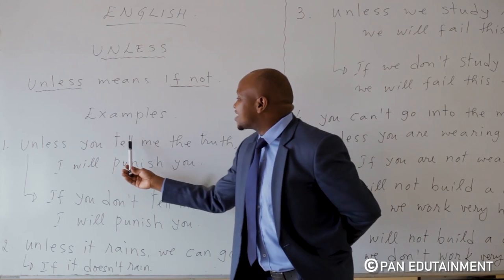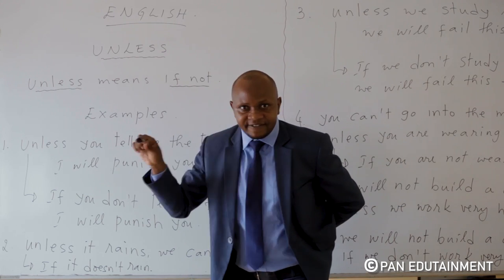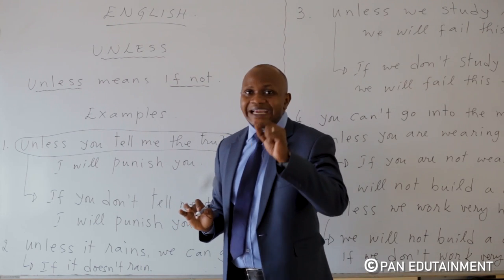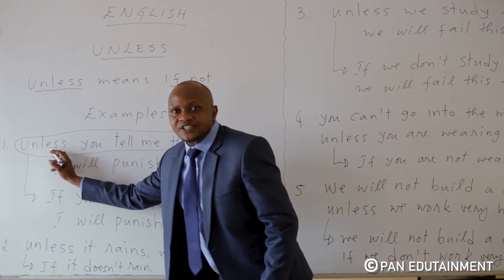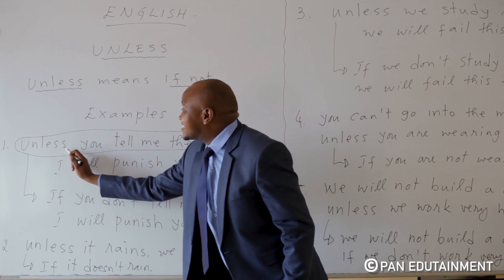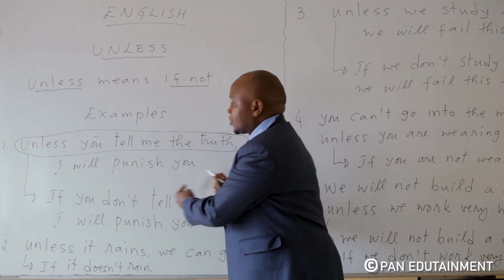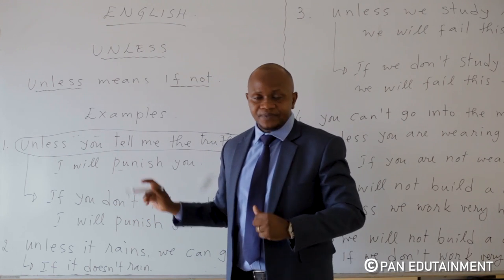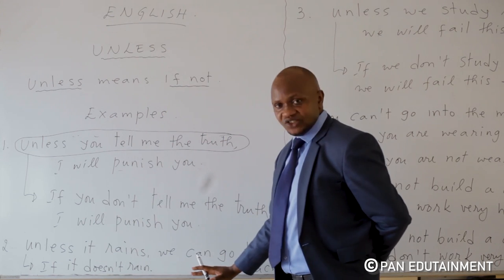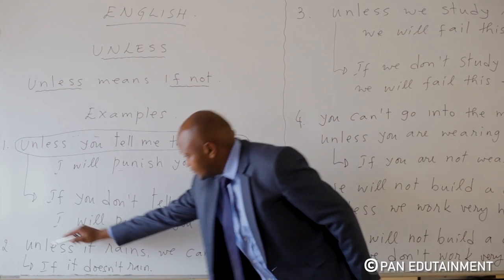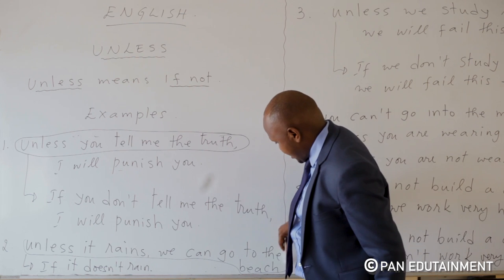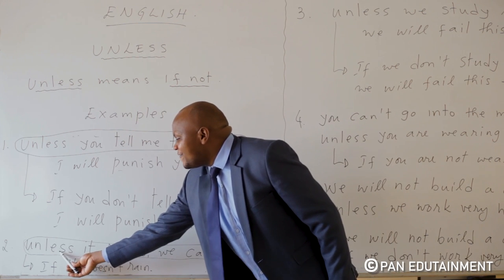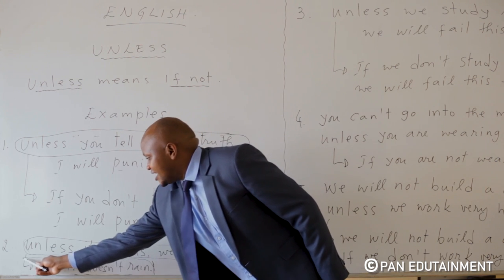It's like saying: unless you tell me the truth — don't say 'unless you don't tell me the truth', never. The sentence with 'unless' cannot be put into negative form. When you say 'unless', you remove the negative from the first sentence. Number two: unless it rains, we can go to the beach.